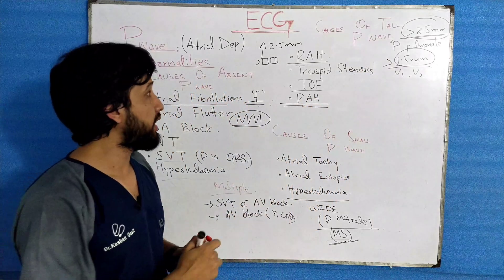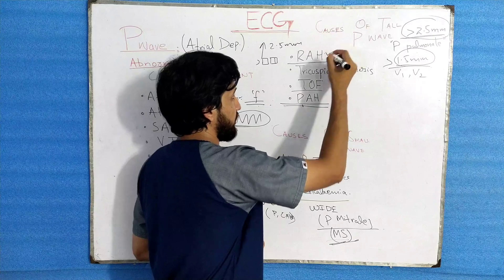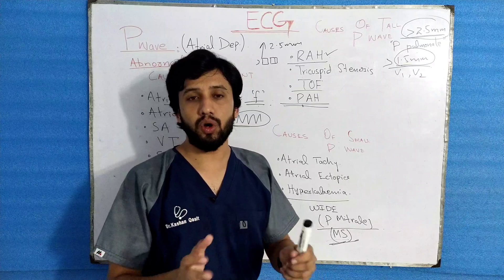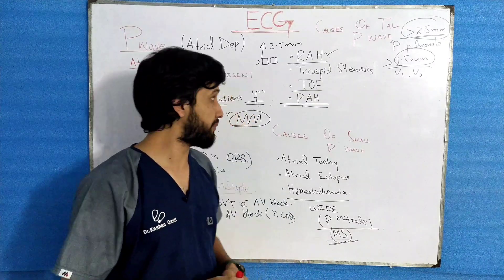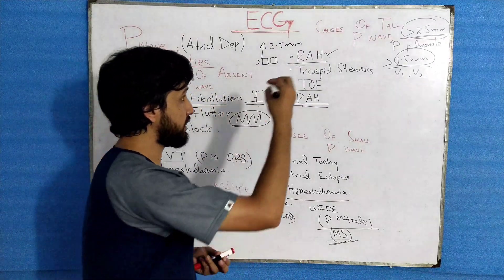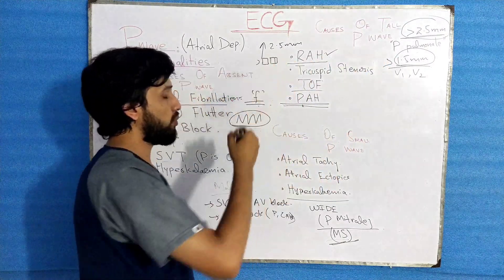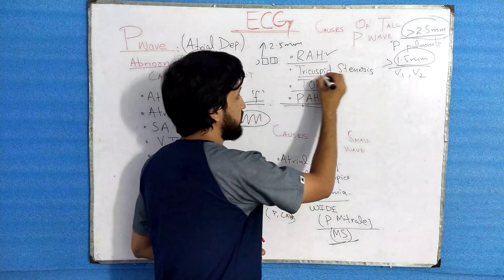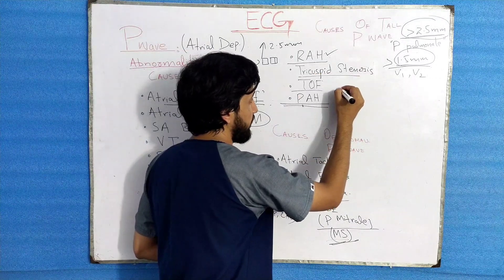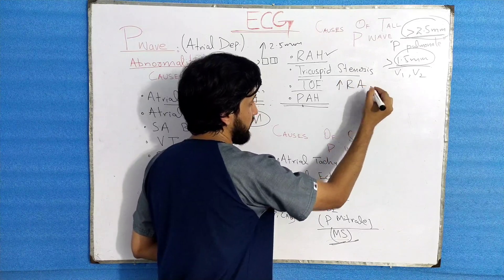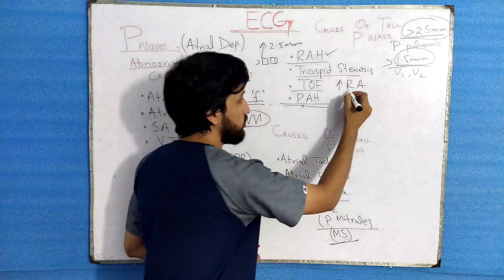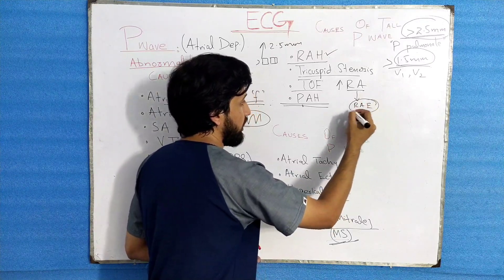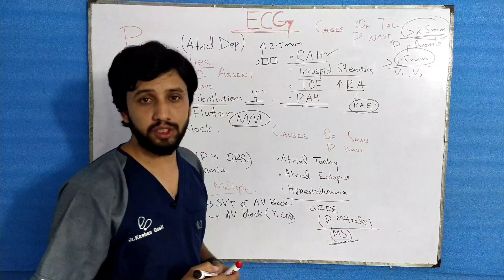P pulmonale is also seen in Tetralogy of Fallot and pulmonary arterial hypertension. In right atrial hypertrophy, there is enlargement of the right atrium, which can be due to cor pulmonale or COPD. In these conditions the P wave is greater than 2.5 mm. In tricuspid stenosis, there is increased right atrial pressure leading to right atrial enlargement, again producing a tall P wave on the ECG.